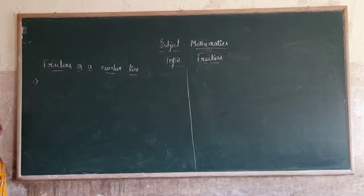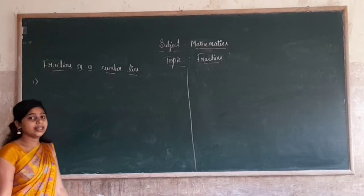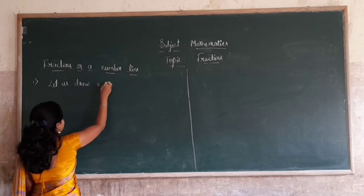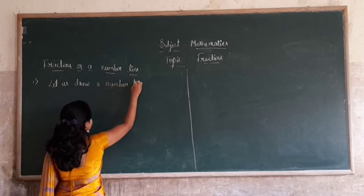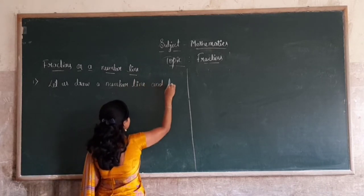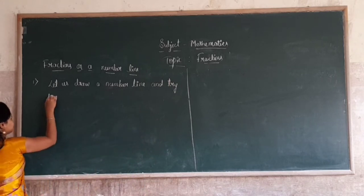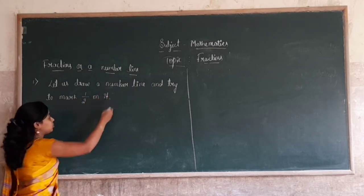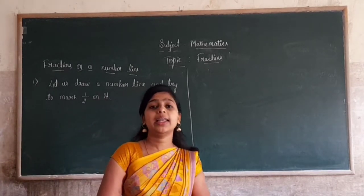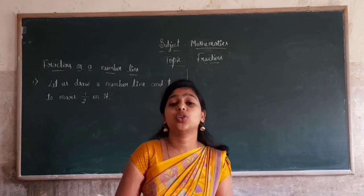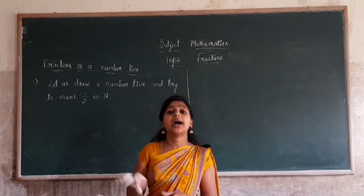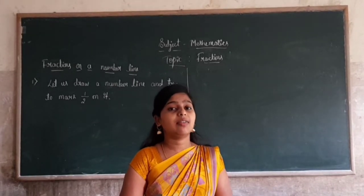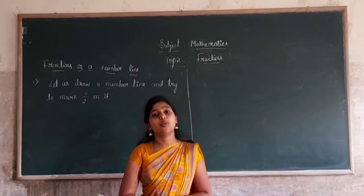Let us draw a number line. I am trying to mark 1 by 2 on it. So 1 by 2 is greater than 0 and less than 1, so it should be between 0 and 1. We have to divide the gap between 0 and 1 into 2 equal parts and mark one part as 1 by 2.